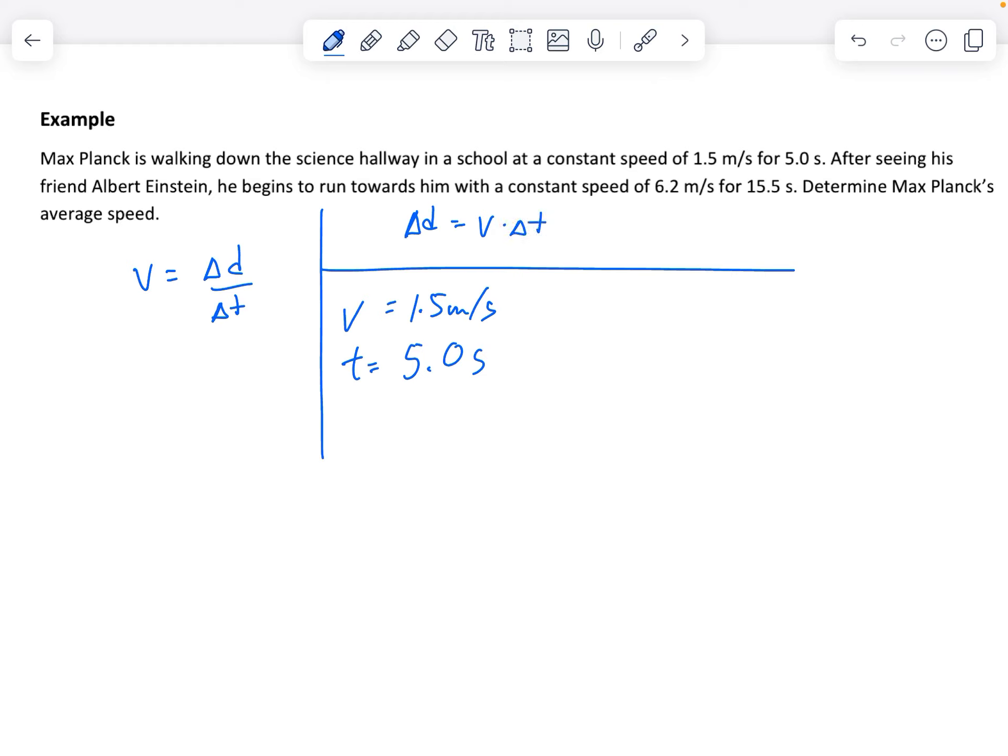And so for this first interval we have Max Planck traveling at 1.5 meters per second for five seconds. I can use that to calculate the total distance that he traveled in that interval. So in that period of time when he's traveling a little slower for less time his distance covered is going to be the speed times the change in time. And so we have 1.5 meters per second and that happens for 5.0 seconds.